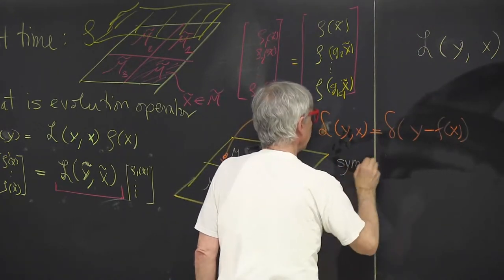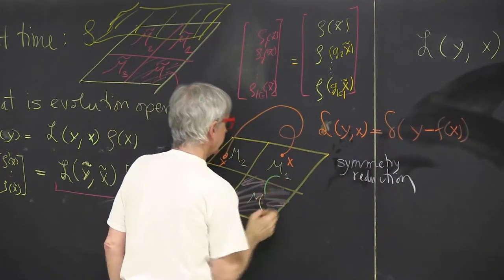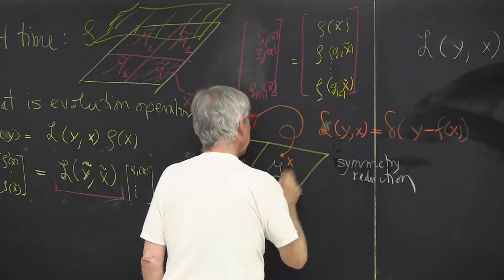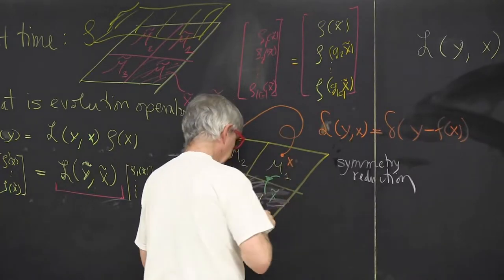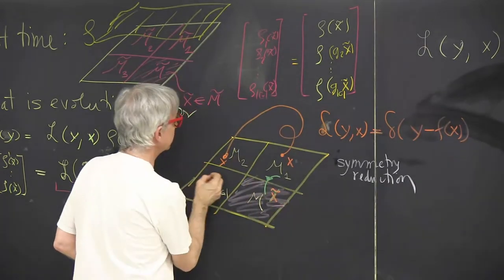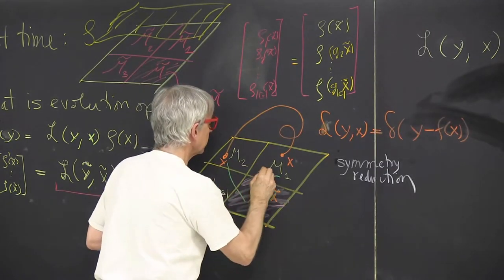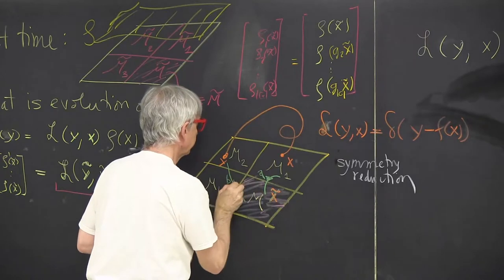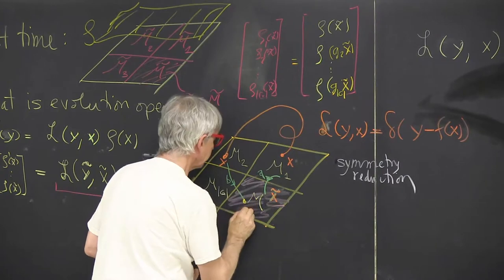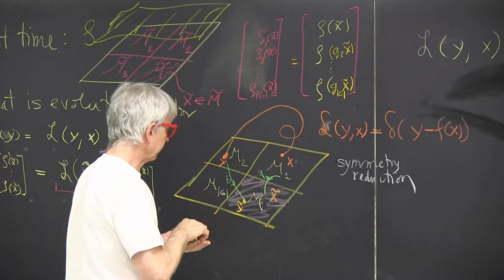Symmetry reduction says that there is a group element which I'll call A that maps this point into its fundamental domain system. And there is another group element, so I'll call this A and I'll call this B, that maps the whole tile and particularly maps the endpoint y into its image in the fundamental domain.